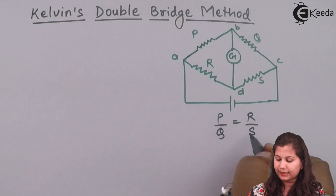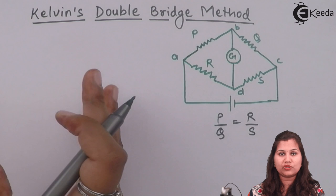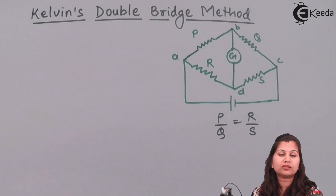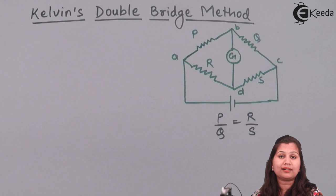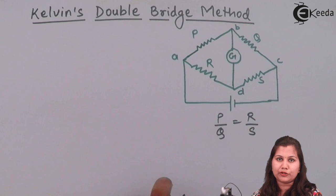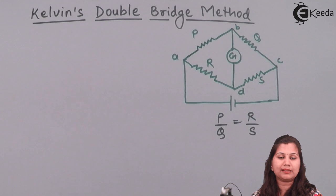The Kelvin double bridge is a modification of the Wheatstone bridge because the Wheatstone bridge can measure resistances from a few ohms to several mega ohms. But if we want to measure resistances which are very low — under 1 ohm — then we use the Kelvin double bridge, which requires some modifications to the Wheatstone bridge.